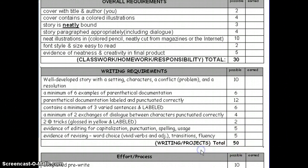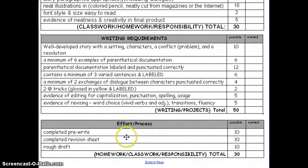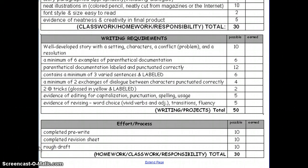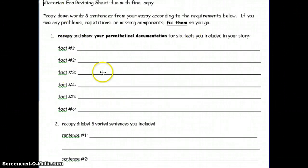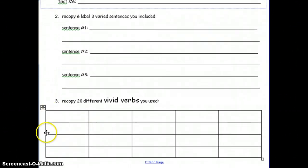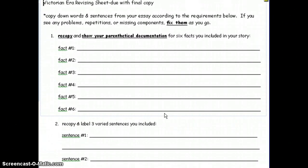This will total 50 points, which will go as part of the writing grade. The last part I call the effort process — this tells me that throughout the last four weeks, they've done all the steps. We gave them a pre-write, and I gave them two days in class to work on the pre-write or rough draft. I will be collecting that to look at examples. Some students immediately started typing, so I'd expect to see a printed draft showing where they've taken their writing from the draft to the final copy. Today in class I handed out a revising sheet — going through to make sure they have everything required, listing their six facts with parenthetical documentation, their three varied sentences, and showing vivid verbs they used. If they can't find any of these things, that tells them what they need to work on.